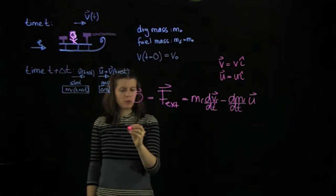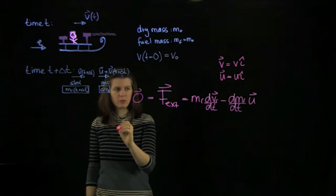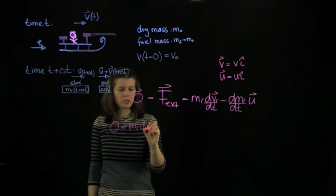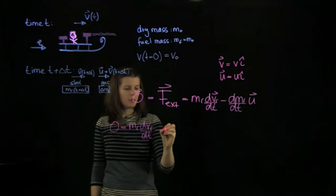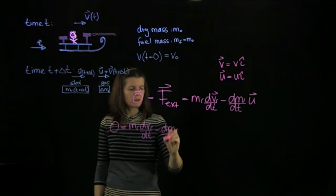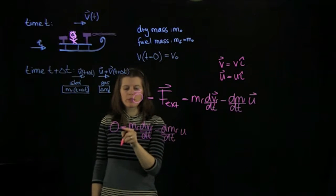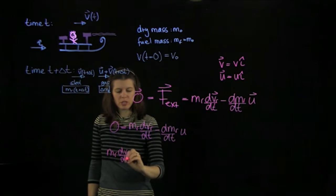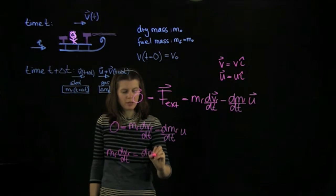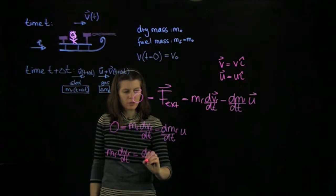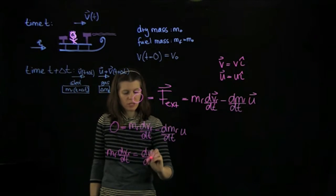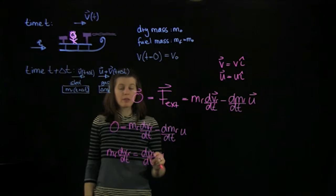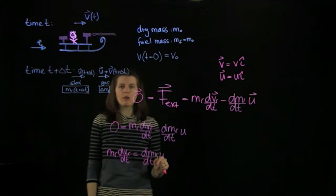We can then turn this equation. We can apply all of this. We will get 0 equals mr dvr dt minus dmr dt u. We can bring this one on the other side. And we end up with the relationship that we wanted to obtain, namely an equation that contains the differentials of the speed of the rocket, that sled, and the differential of the mass.